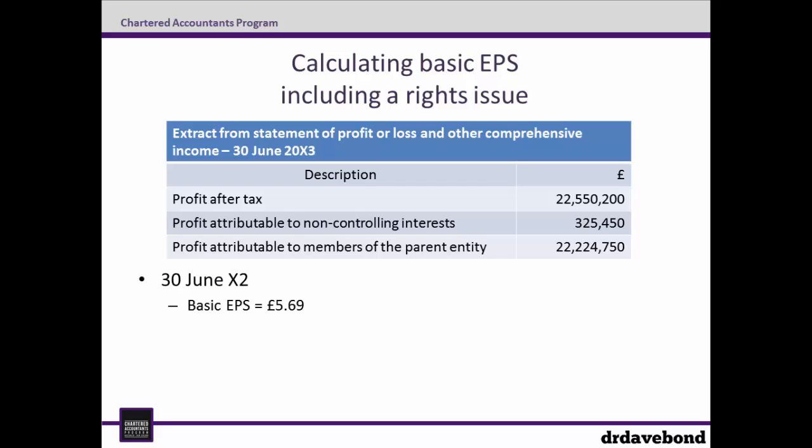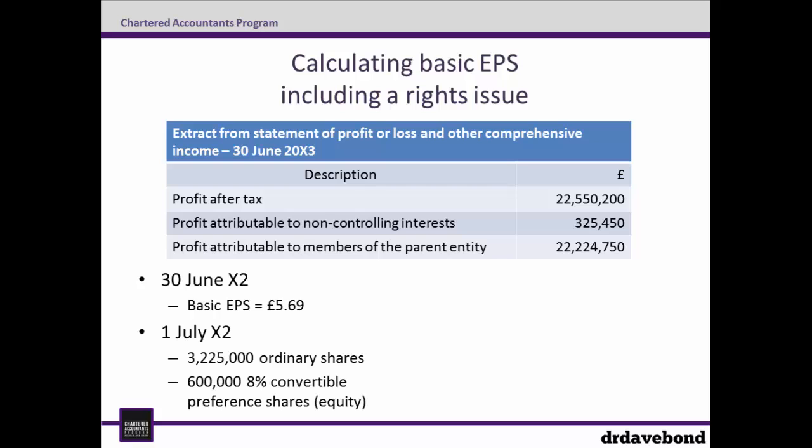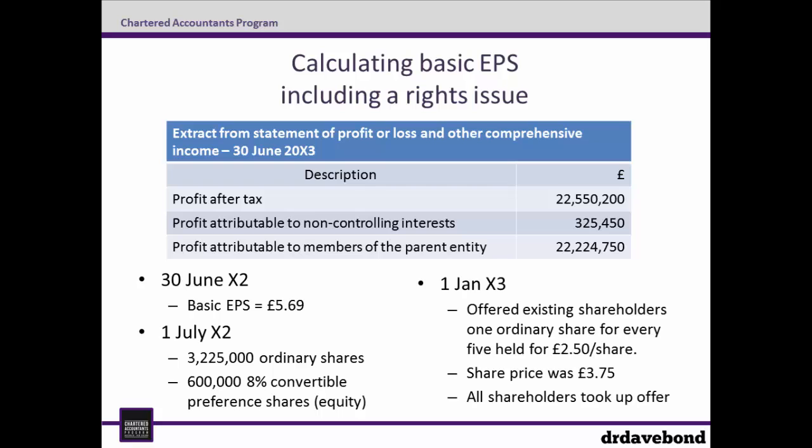At the end of the previous year the basic EPS was £5.69. At the start of the year there were 3,225,000 ordinary shares outstanding as well as 600,000 8% convertible preference shares, issued at £1 each and classified as equity. On the 1st of January 20X3, existing shareholders were offered one ordinary share for every five held for £2.50 per share. The share price at the time of the rights issue was £3.75, and all shareholders took up the offer.